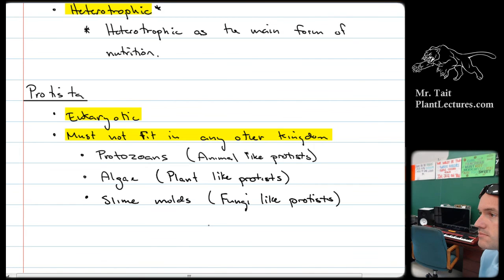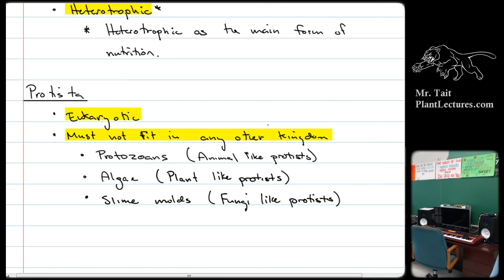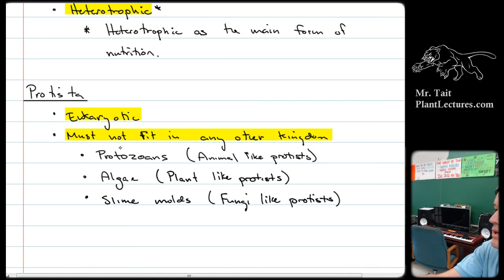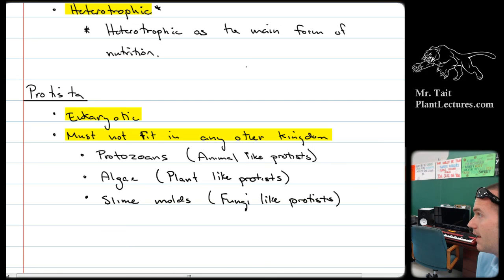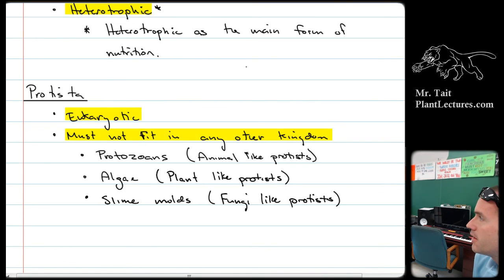A sponge would be classified as animal-like if they make more kingdoms. Most of the new kingdom systems agree: instead of just having kingdom Protista, you should have the kingdom Protozoa, the kingdom Algae, and a kingdom for slime molds as three separate things. Then more organisms could be pushed into those groups without it being ridiculous. The kingdom Protista is sort of the junk drawer of the kingdom system — if you can't fit anywhere else, that's where you go.